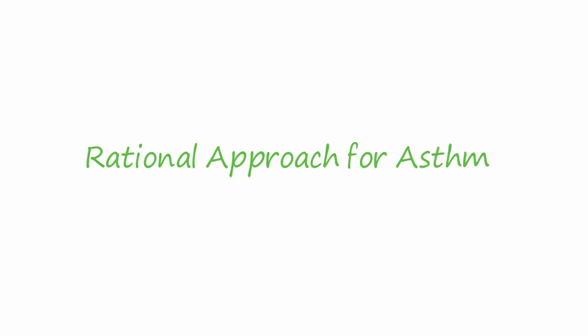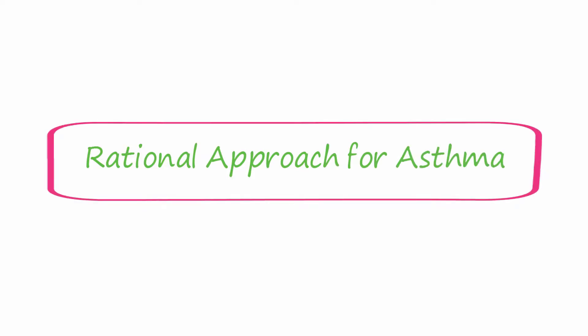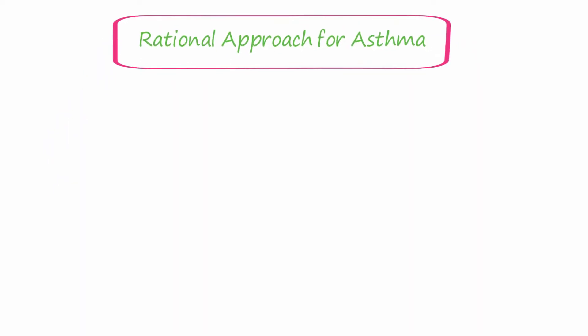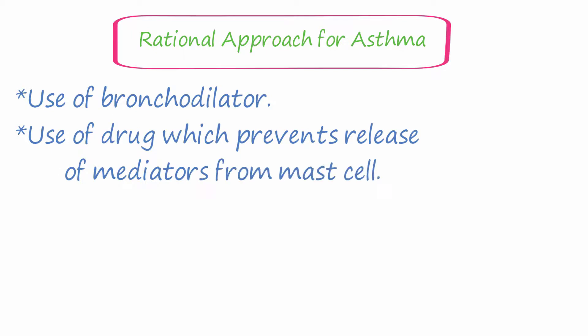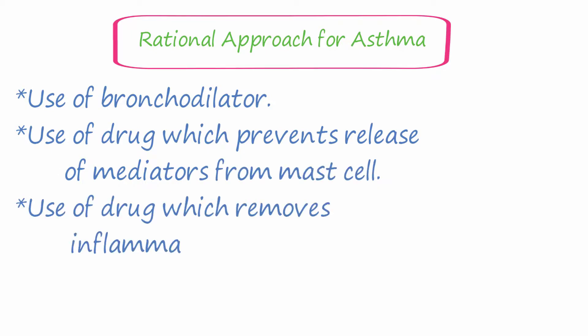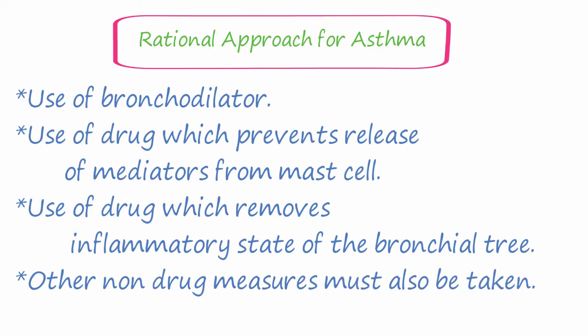Now, what is the rational approach for asthma? We will discuss the rational approach for asthma. Number one: use of bronchodilators. Number two: use of drugs which prevent release of mediators from mast cells. Number three: use of drugs which remove the inflammatory state of the bronchial mucosa. Other non-drug measures must also be taken.